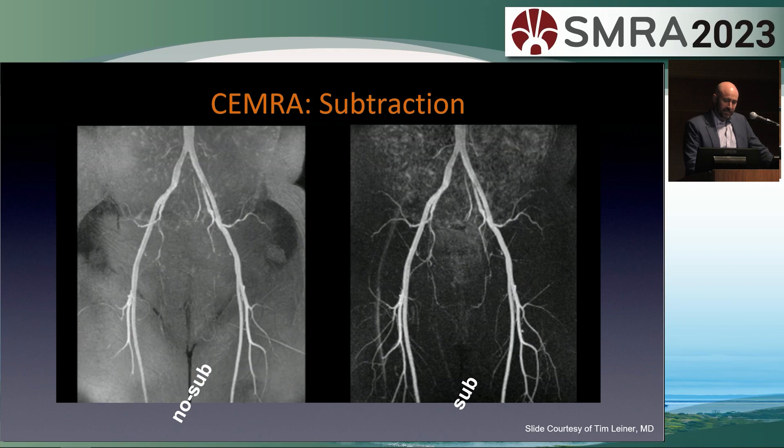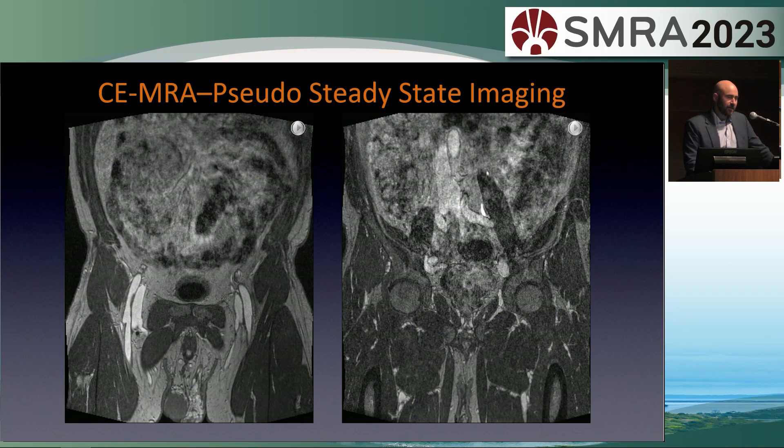A nice example of retrograde flow in the left ovarian vein going to the pelvis with pelvic varicosities. Subtraction is important from a post-processing perspective. Without subtracted images, it's harder to communicate findings with referring colleagues who don't want to look at thousands of images. The image on the left is without subtraction — contrast is only in the arteries but there's still a lot of overlapping structures. The image on the right with subtraction makes it much easier to appreciate the relevant vascular anatomy.